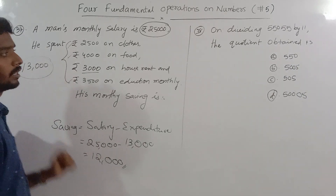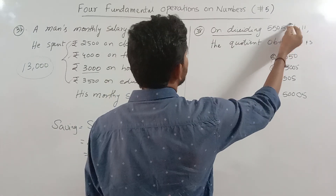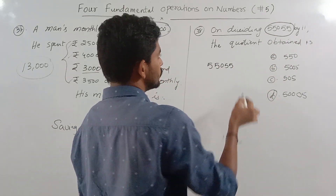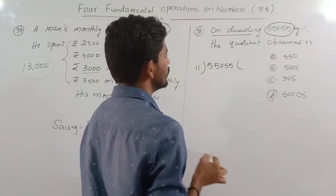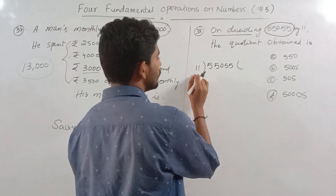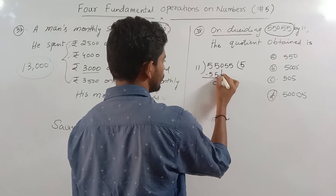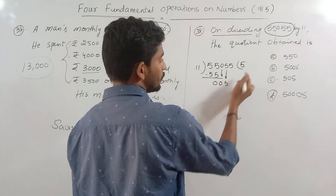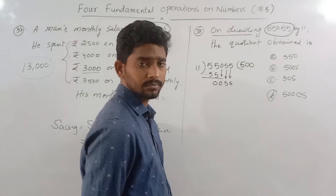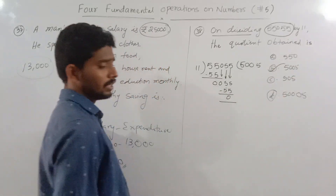On dividing 55,055 by 11, what quotient is obtained? We do the division: 11 into 55 is 5, remainder 0; bring down 0; 11 into 0 is 0; bring down 55. The number after dividing step by step gives us the correct quotient answer.